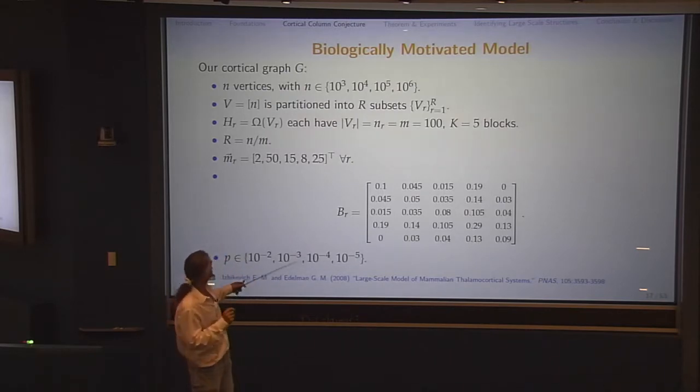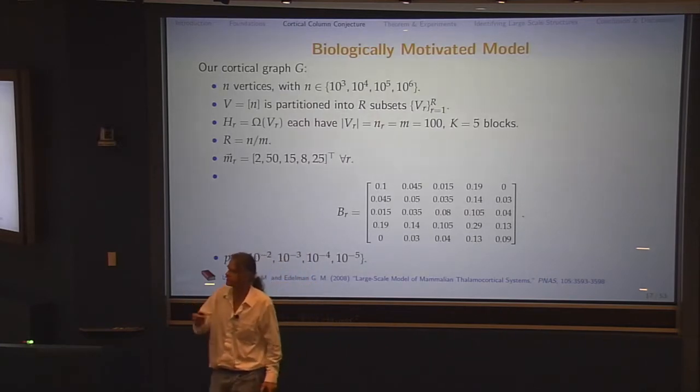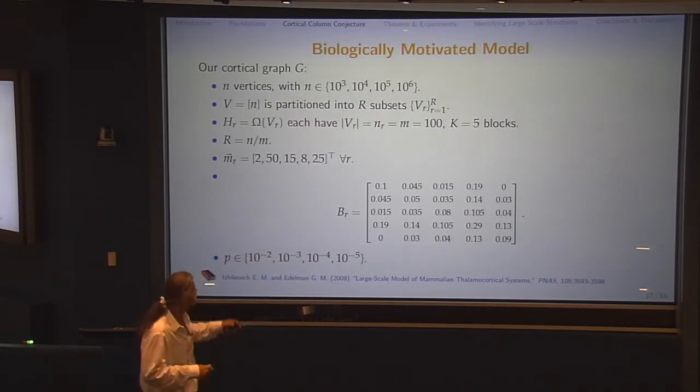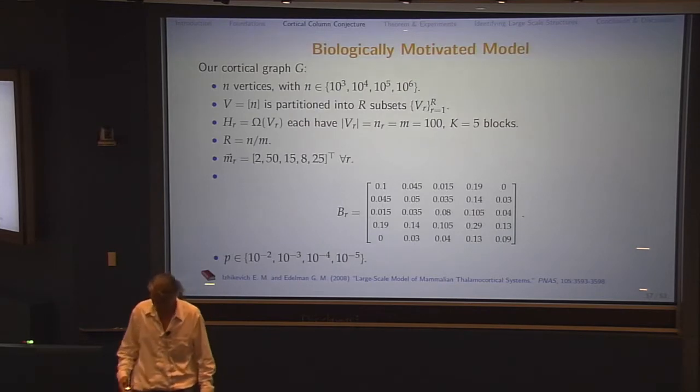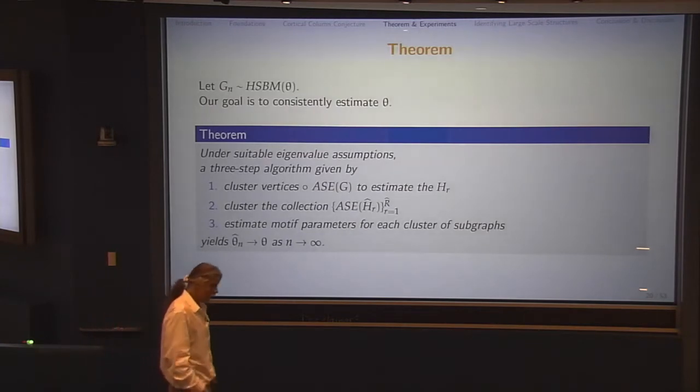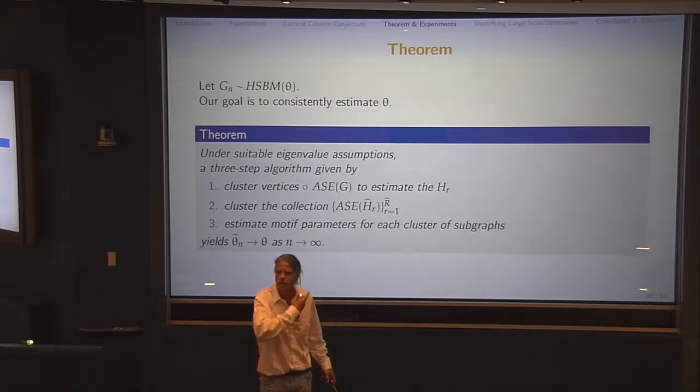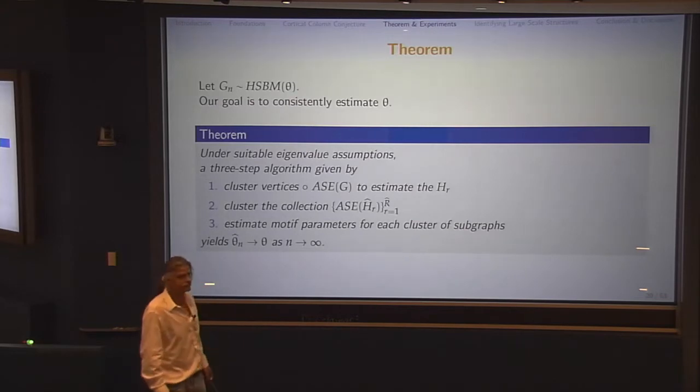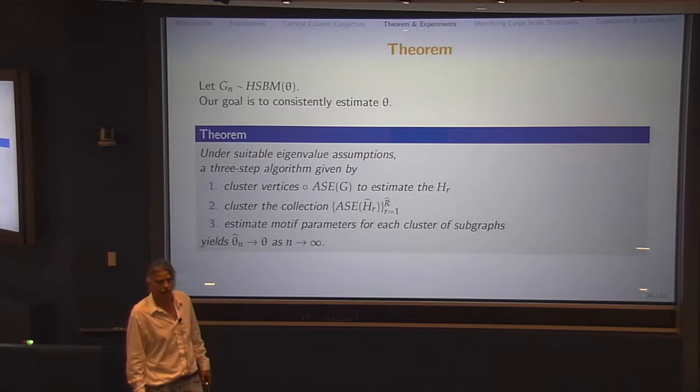That's what represents the repeated processing module. So if I had 10 to the fourth subgraphs in the cortex, but they came in only two different random variable types, then I'd have capital R over 2 of these B's on the diagonal would be the same, and the other capital R over 2 would be the same as each other but a different block model. So that would be the two, the limited set of computing primitives being two. Here's a biologically motivated model that we've investigated. This is taken out of Izhikevich and Edelman's 2008 PNAS paper. This gives a directed connectivity matrix for neuron types, post-synaptic neurons as the rows and pre-synaptic neurons as the columns.